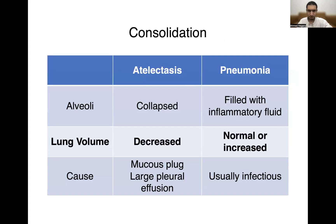Let's try to differentiate between atelectasis and pneumonia. Atelectasis is basically collapsed lung. When you look at a lung that is collapsed, the alveoli will have no air — they'll be completely collapsed. The lung volumes will be decreased. The collapsed lung will likely be due to either a mucus plug or a large pleural effusion compressing the lung.